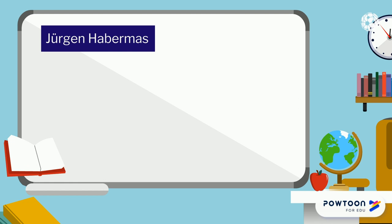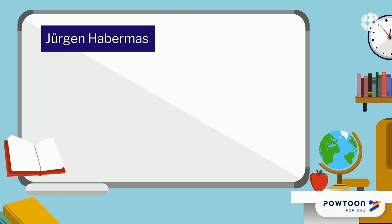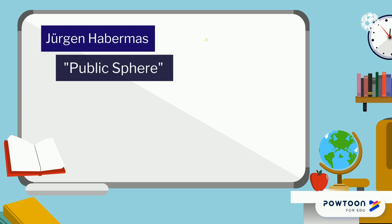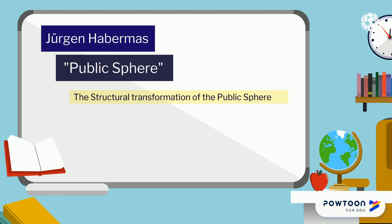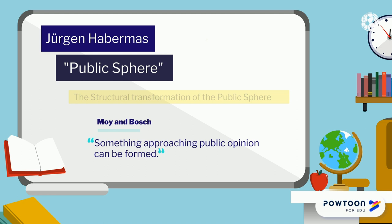German social theorist Jürgen Habermas contributed the idea of the public sphere to the discussion of public opinion. In 1962, Habermas introduced the concept in his book The Structural Transformation of the Public Sphere. The public sphere, or bourgeois public, is, according to Habermas, where something approaching public opinion can be formed. Habermas claimed that the public sphere featured universal access and rational debate. However, he believes that a variety of factors resulted in the eventual decay of the public sphere, including the growth of a commercial mass media which turned the critical public into a passive consumer public.